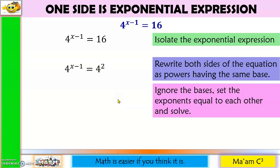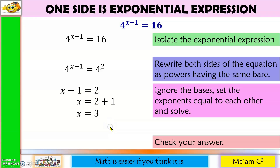Step 3: ignore the bases, set the exponents equal to each other and solve. So I have x minus 1 is equal to 2. Let us solve for x. Let us move negative 1 to the other side — it will become positive 1 — and 2 plus 1 is equal to 3. So x is equal to 3. Last step, check your answer. Substituting our value: 3 minus 1 is equal to 2, so 4 squared is equal to 16, and 4 squared is equal to 16. So 16 is equal to 16. Therefore, our answer x equals 3 is correct.